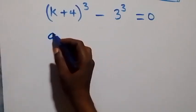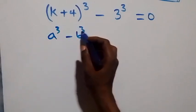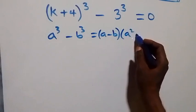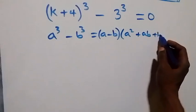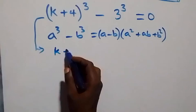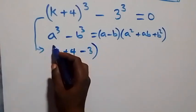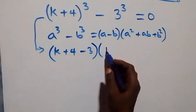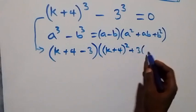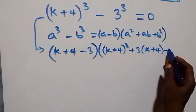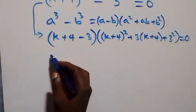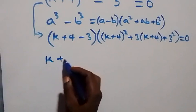For the second case, k plus 4 raised to power 3 minus 3 raised to power 3 equals zero. This follows from the difference of cubes identity a cubed minus b cubed equals a minus b times a squared plus ab plus b squared. So we have k plus 4 minus 3 into brackets, k plus 4 squared plus 3 times k plus 4 plus 9, equals to zero.